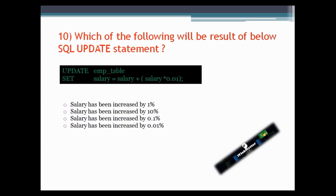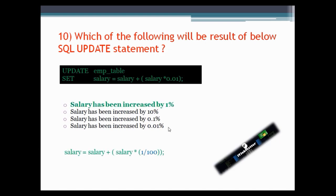This question asks what will be the result of the given SQL UPDATE query. In the query they are updating the employee table and doing some operation on salary: salary = salary + salary * 0.01. This means salary is being increased by 1%. The correct answer is: salary has increased by 1%. The speaker jokes it looks like the same query used on his salary when he was at IBM.